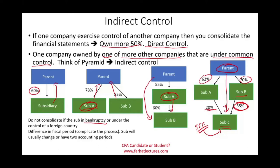Bear in mind, if you don't consolidate, what you have is a single-line investment in the company. So if you don't consolidate for one reason or another, the subsidiary essentially becomes an investment for you. Now let me show you another example of indirect control.